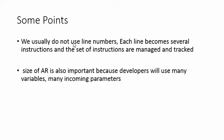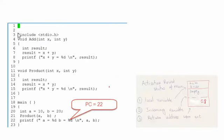Note that we don't normally use line numbers like this. This is just a simple example. In reality, it's instructions that the compiler generates, and the system deals with those instruction sets.